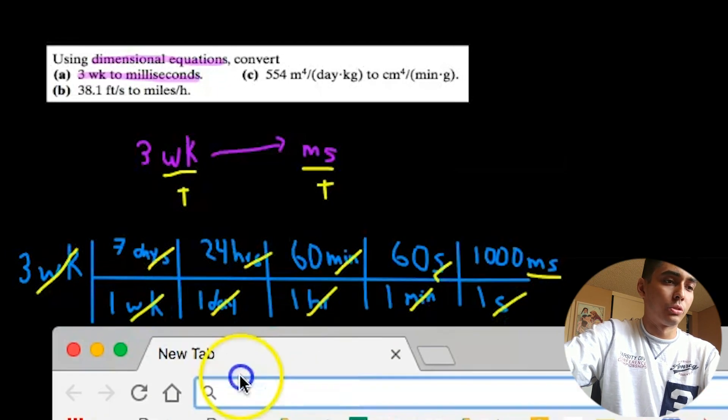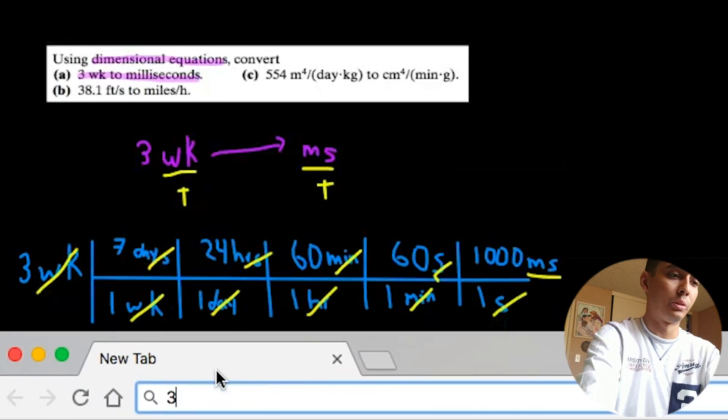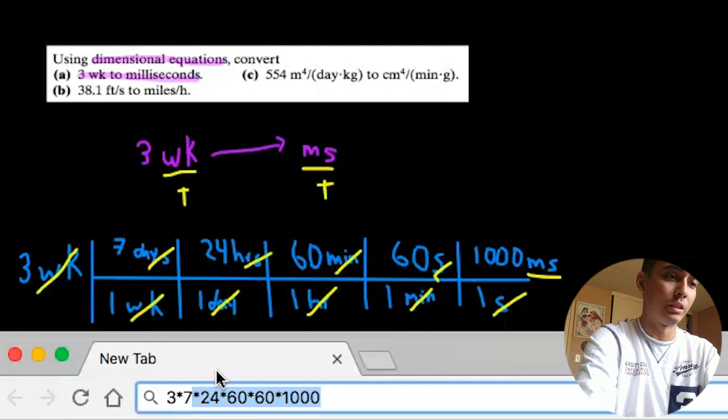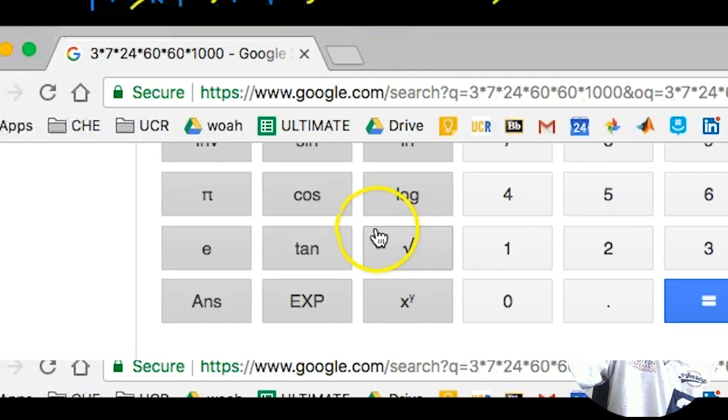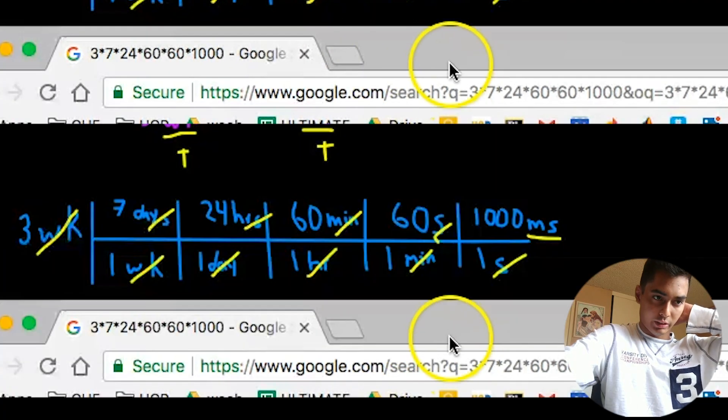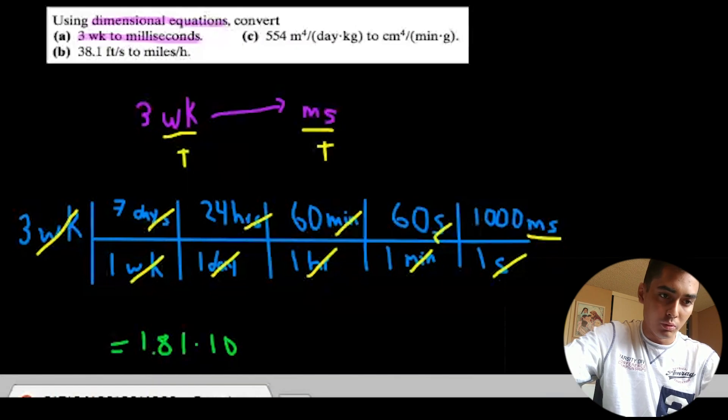We can literally just use Google to do this quick calculation. Three weeks times seven days times 24 hours. I did it before, as you can see.